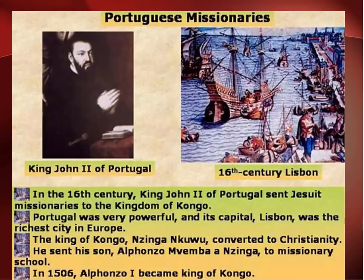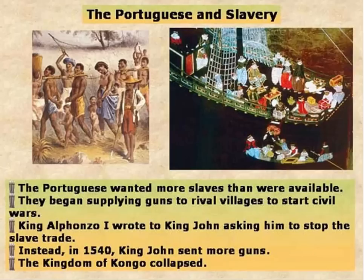The Portuguese also began sending missionaries to areas like the Kingdom of the Congo. The Kingdom of the Congo — spelled with a K — is not the same as the country of the Congo today in the interior of Africa; this Kingdom of the Congo was on the coast. The King of the Congo converts to Christianity, sends his son to a missionary school, and his son Alfonso begins becoming the King of the Congo. The Portuguese really began to start the slave trade and reoriented the trade routes of Africa to the Atlantic coast.